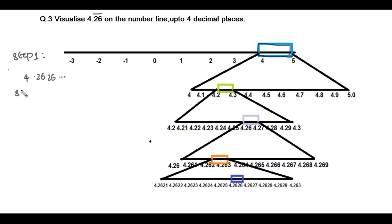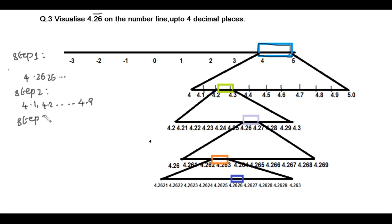In step 2, we take 10 divisions between 4 and 5: 4.1, 4.2, and so on up to 4.9. From the first digit we understand the number is between 4.2 and 4.3, so in step 3 we take 10 divisions between 4.2 and 4.3: 4.21, 4.22, 4.23, and so on, marking 4.21 through 4.29.